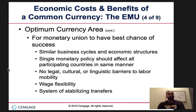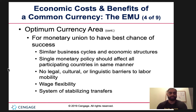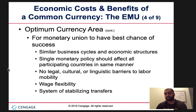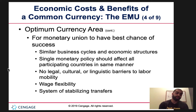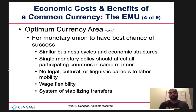For the monetary union to have the best chance of success, countries need similar business cycles and economic structures. If there's uniformity throughout the process, it makes transactions much easier. If one country experiences a boom, another will as well; if one goes through a recession, others feel the impact too. There should be no legal, cultural, or linguistic barriers to labor mobility — you can work in Spain and then move to France. Wage flexibility and transfer payments are also much easier in an optimum currency area.